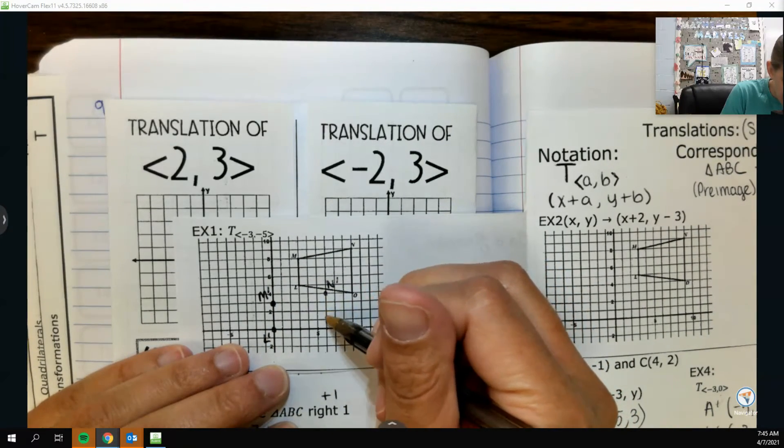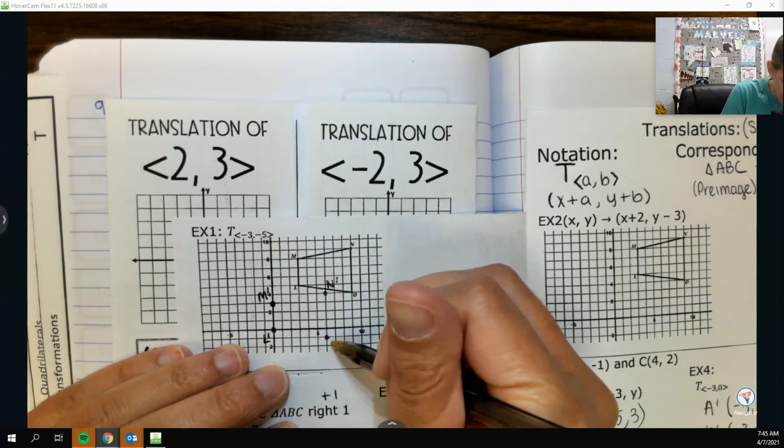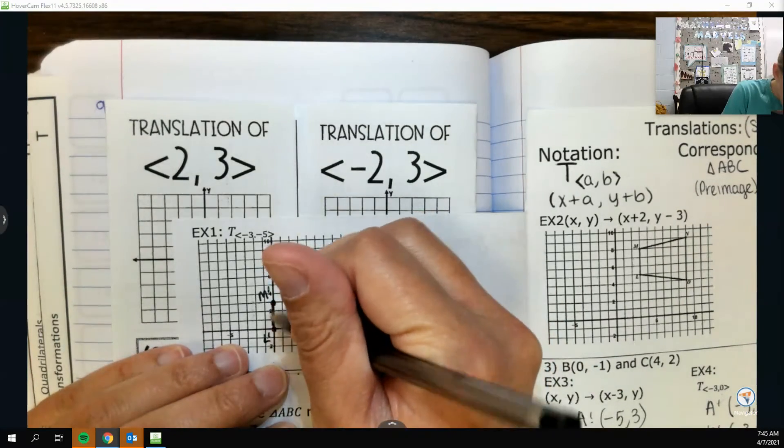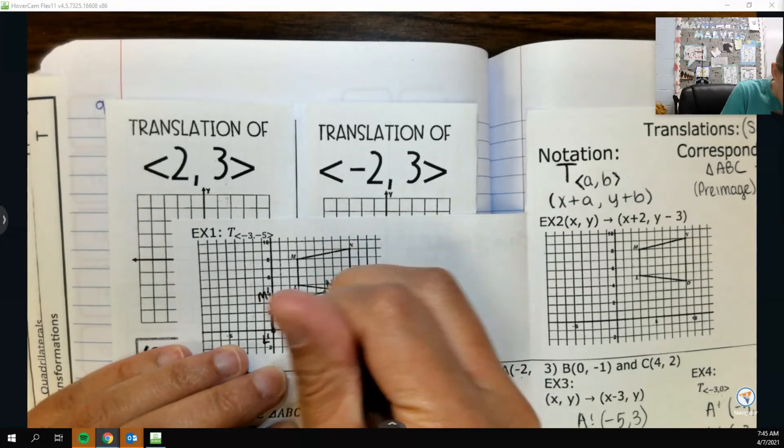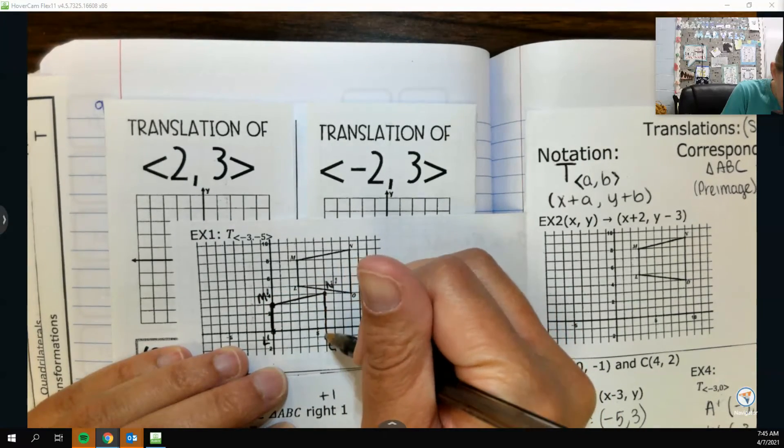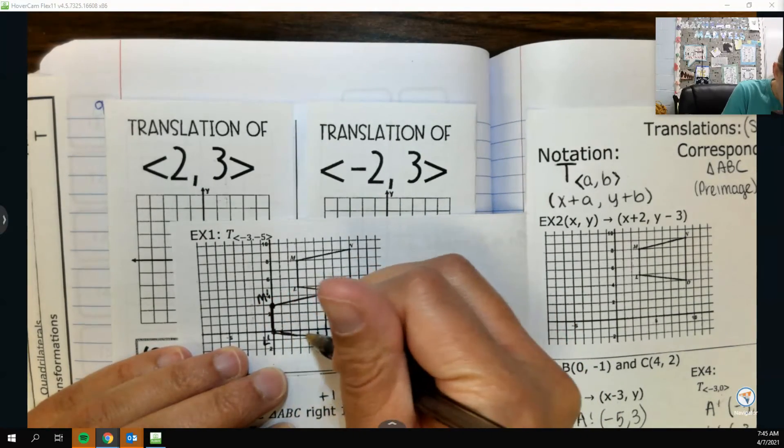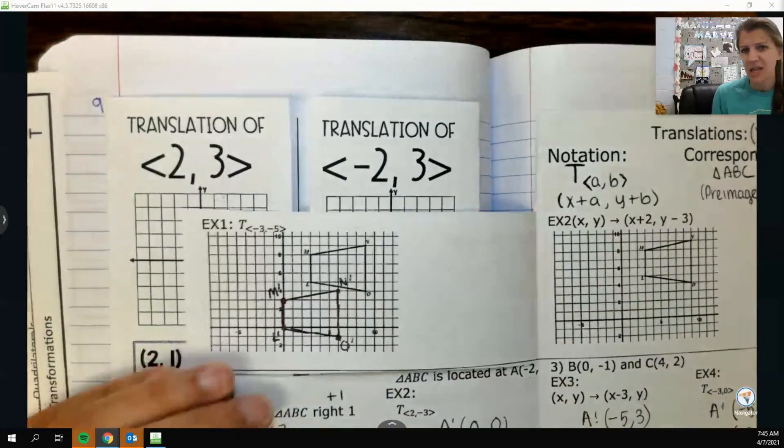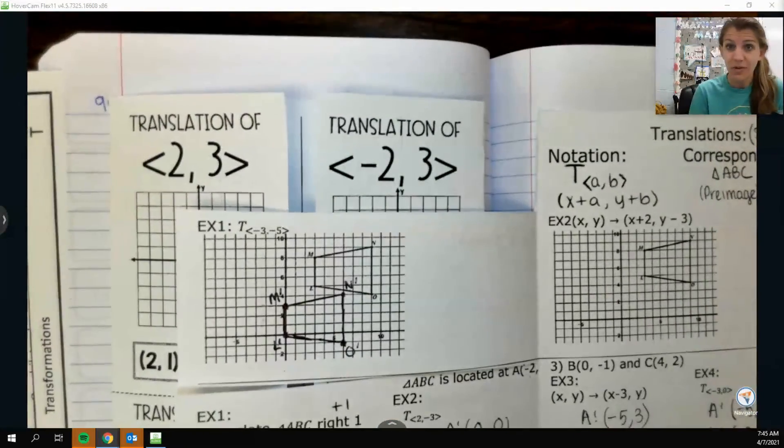And then O, 1, 2, 3, 1, 2, 3, 4, 5. And then we just reconnect to get our trapezoid back. And you should notice that everything is still the same length and angle measure and the shape still looks like it's the same shape. Just shifted over.